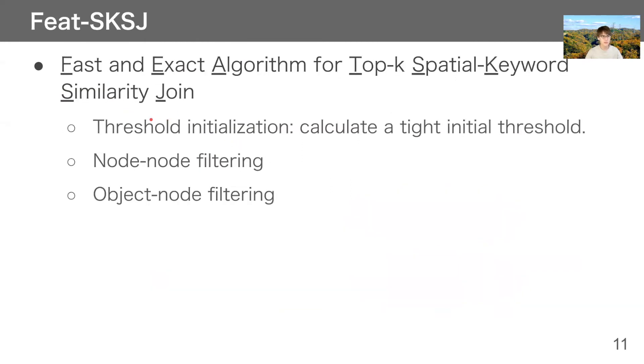To address this problem, we propose Feat-SKSJ, which stands for First and Exact Algorithm for Top-K Spatial Keyword Similarity Join. Our algorithm consists of three parts. The first one is threshold initialization. It is to calculate a tight initial threshold. The second one is node-node filtering, and the last one is object-node filtering. By this filtering, we can decrease the amount of similarity calculations.